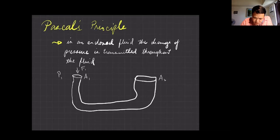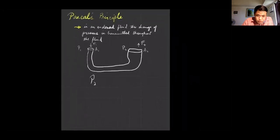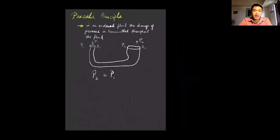So there should be an output force here and the pressure according to Blaise Pascal should be equal to each other. p1 should be equal to p2. Okay, that's according to Blaise Pascal. So p2 should be equal to p1.